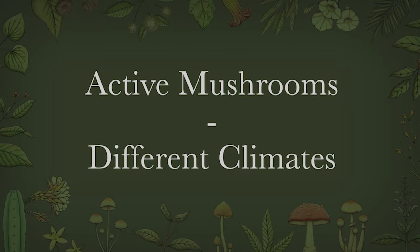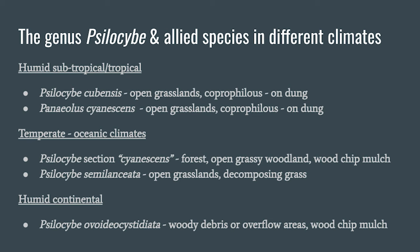In all these videos we've been speaking to active species. I'm going to speak to the genus Psilocybe and allied species. At the beginning of the presentation I talked about different climate zones — this is a good illustration of the different kinds of fungi you're going to find based on your climate. In humid subtropical and tropical zones, for example, you're likely to find Psilocybe cubensis or Panaeolus cyanescens.